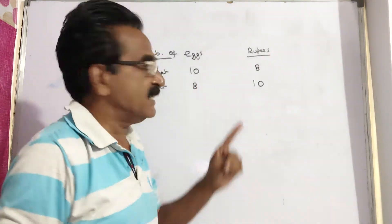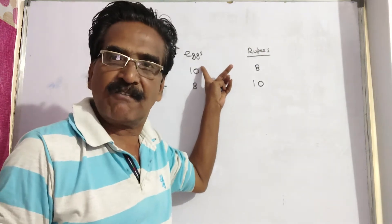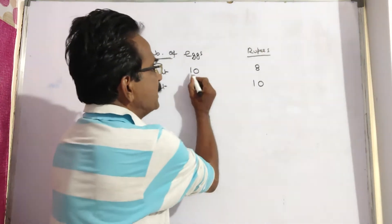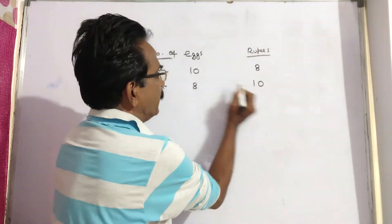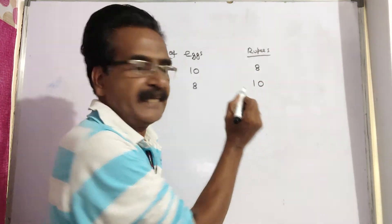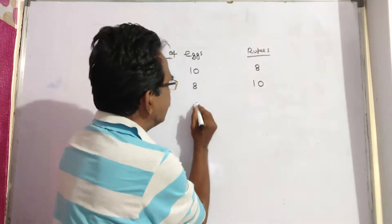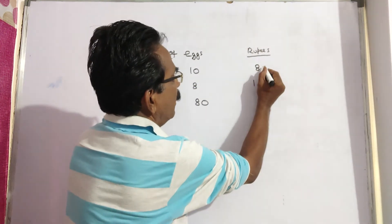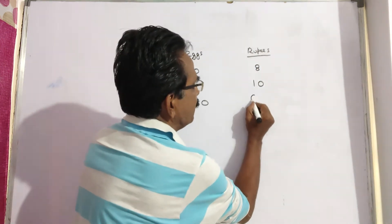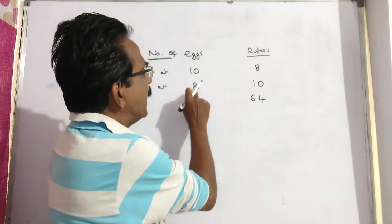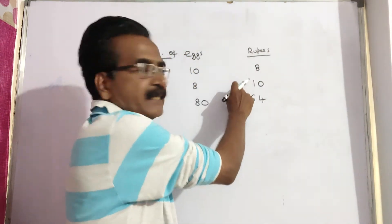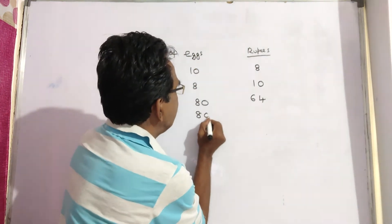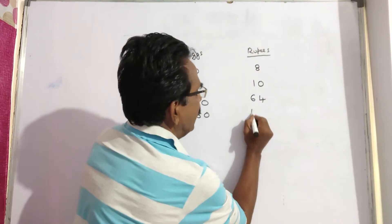Let us equalize the number of eggs in both statements. This is the first statement, this is the second statement. Multiplying the first statement by 8: 8 tens = 80 eggs purchased, at cost 8 eights = 64. Multiplying the second statement by 10: 10 eights = 80, 10 tens = 100. So 80 eggs cost price is 64 and selling price is 100.